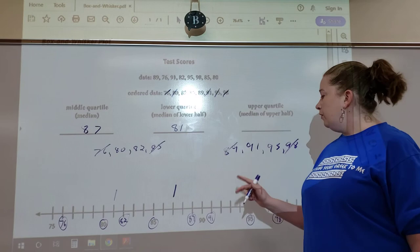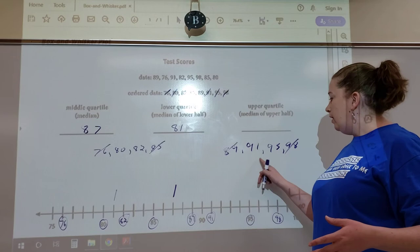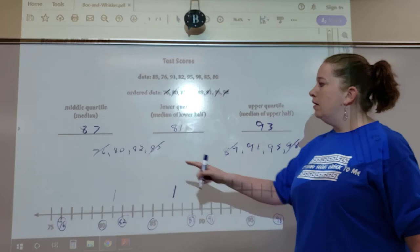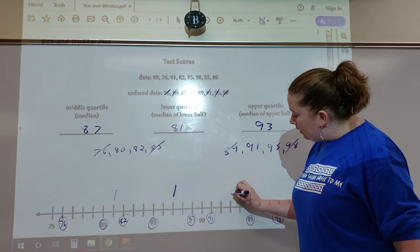I'm going to cross them out again, and once again we end up with two numbers in the middle. So we're going to add those up and divide by 2: 91 plus 95 divided by 2 is 93. So 93 is our upper quartile, and we're going to do another line.